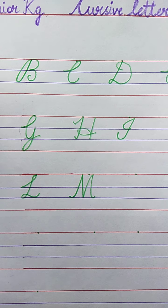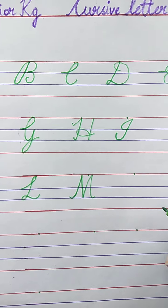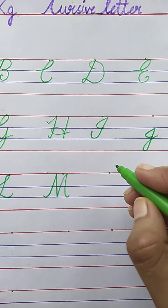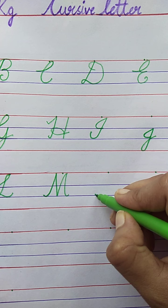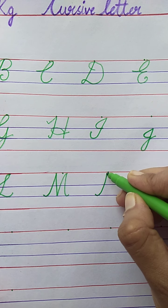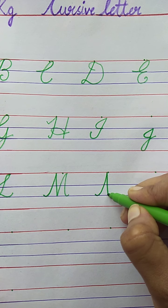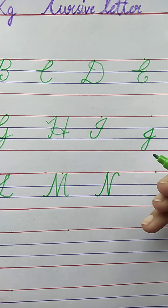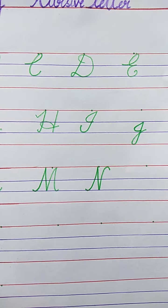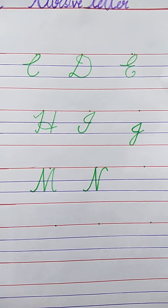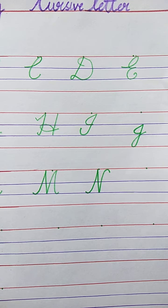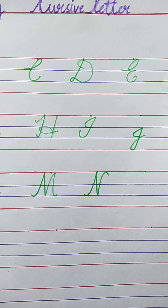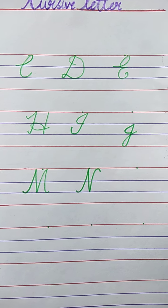Now, tell me the next letter. N. N for Nest. Slanting line, slanting line, one more slanting line. N for Nest. The spelling of Nest is N-E-S-T. Nest.